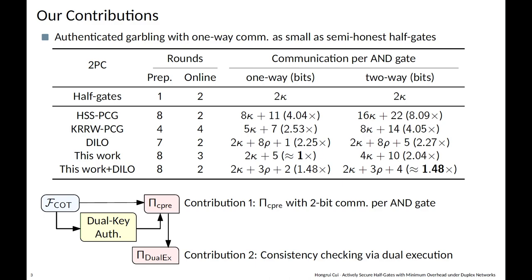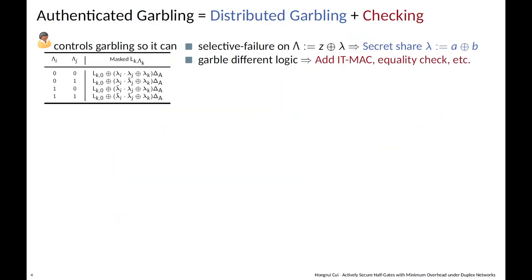In this work, we partially answer that question by proposing an authenticated garbling protocol with one-way communication of 2κ + 5 bits per AND gate, essentially matching semi-honest half gates. We begin by optimizing the DILO preprocessing protocol, reducing communication from 5ρ + 1 bits to 2 bits per AND gate. Building on this, we can apply dual execution to perform consistency checking without introducing the usual 1 bit of leakage, or we can use the DILO online protocol for a variant optimized for total communication.